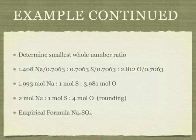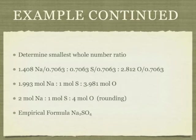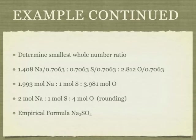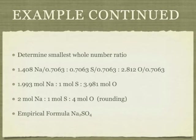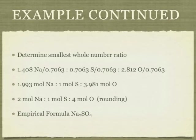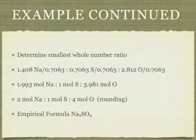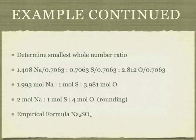Finally, we determine the smallest whole number ratio. And that was the one that was related to the sulfur. So we take 1.408 moles of sodium divided by the 0.7063, and we do that for the sulfur and the oxygen as you can see here in the slide. That gives us 1.993 moles of sodium, 1 mole of sulfur, and 3.98 moles of oxygen.